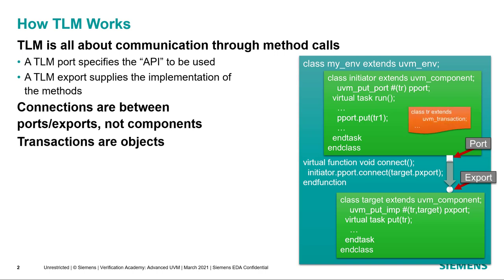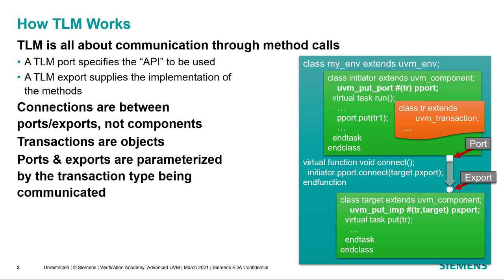In UVM, transactions are objects that encapsulate the information we want to communicate. Each of the ports and exports is parameterized by the type of transaction that flows through the communication. By parameterizing the ports and exports through the transaction type, it allows us to determine at compile time that we're connecting the correct type of port to the correct type of export, so we know by construction that our environment is set up correctly.